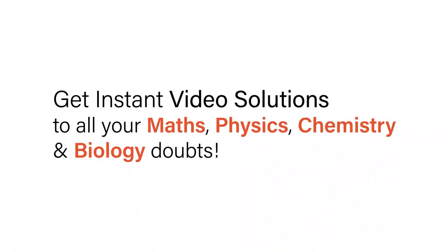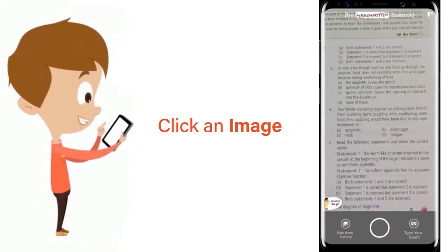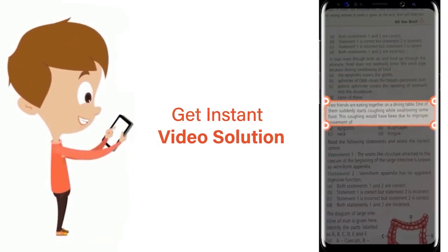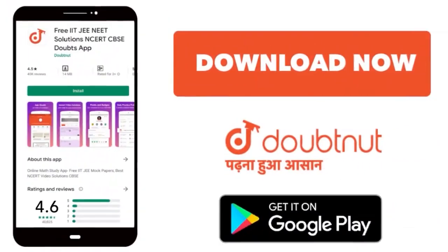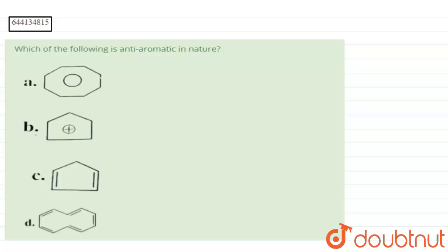With Doubtnut, get instant video solutions to all your maths, physics, chemistry, and biology doubts. Just click the image of the question, crop the question, and get instant video solution. Download Doubtnut app today. Hello students, in the given question we have been asked which of the following compound is anti-aromatic in nature.